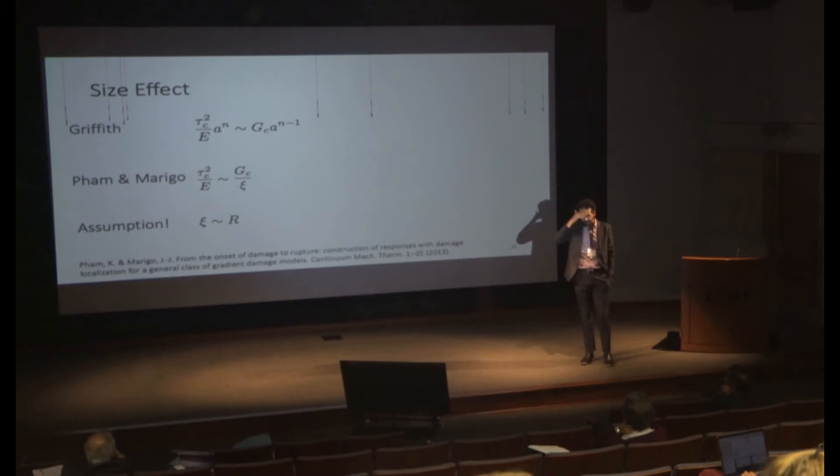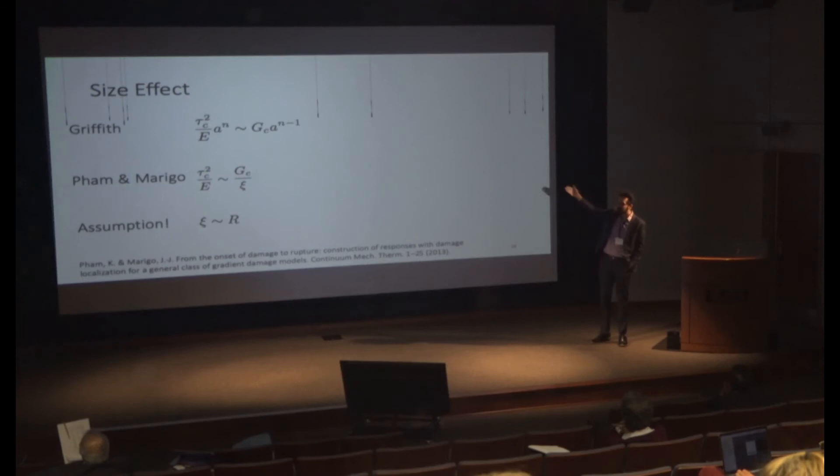So what we usually do is say, let's assume that ℓ scales also with my sample radius, and you can interpret this in different ways. You can say statistically you're more likely to get a bigger flaw size, because in this business there's a relationship between what Griffith did and what Marigo is saying—ℓ becomes like a flaw size for initiating fracture.